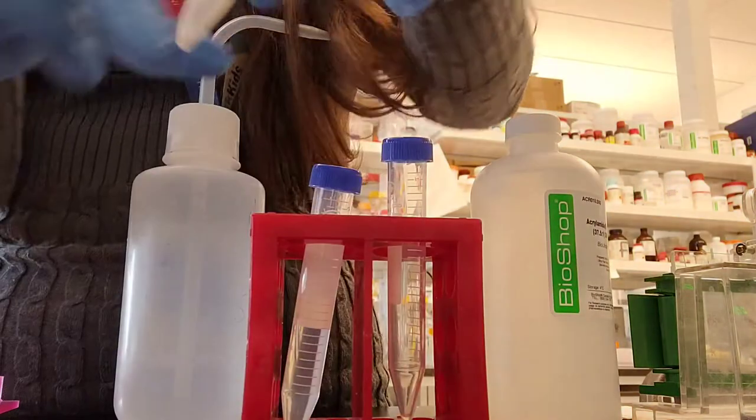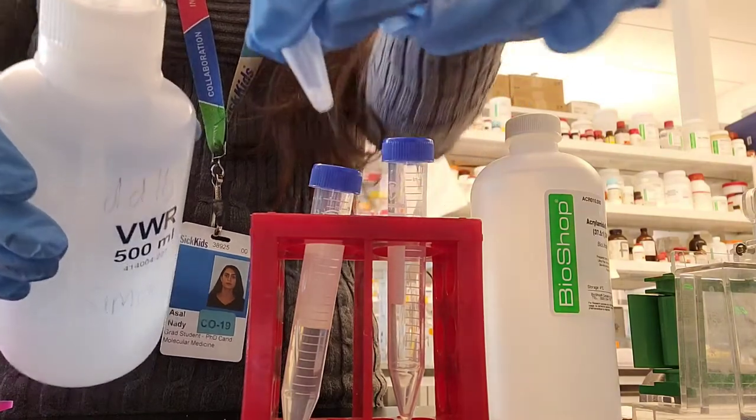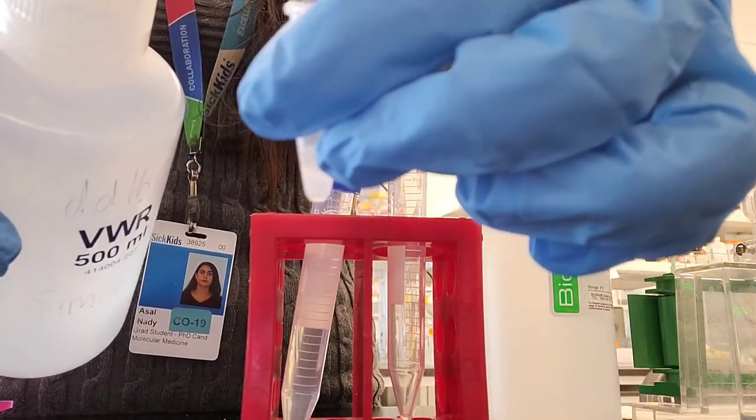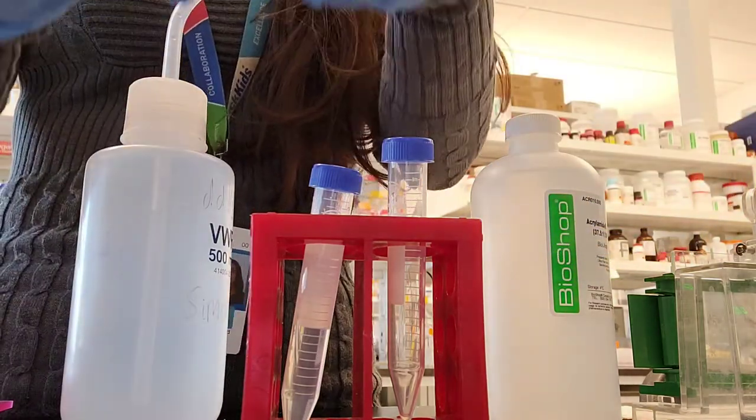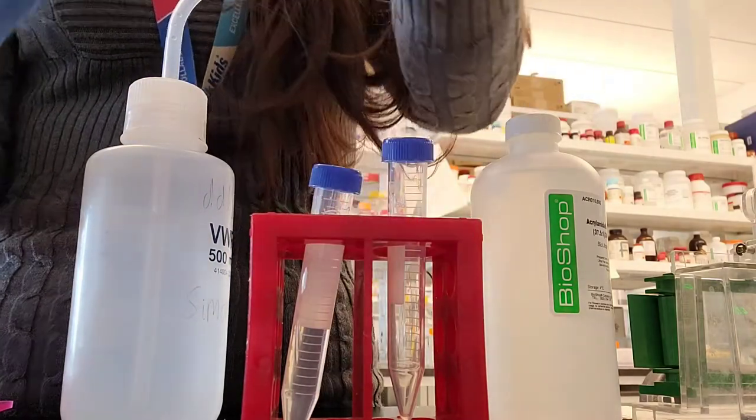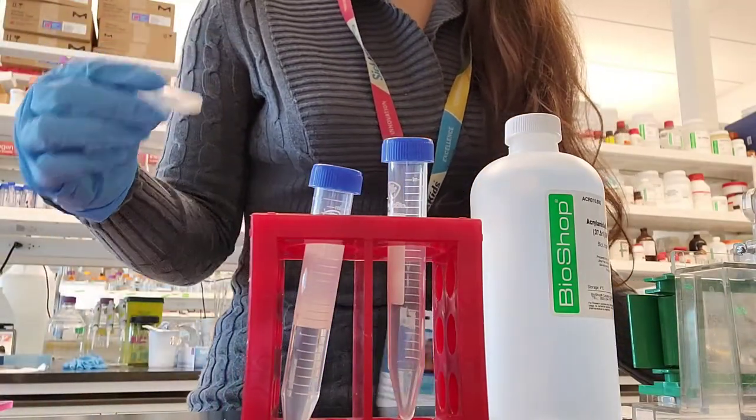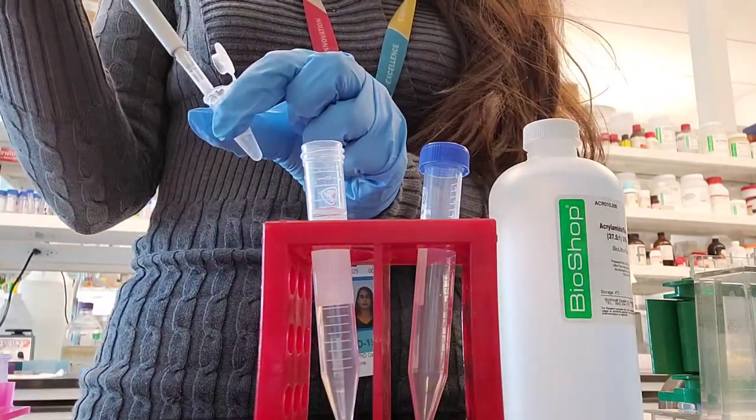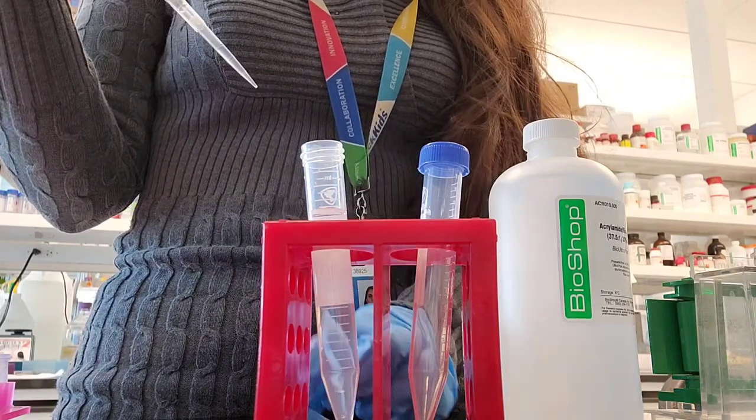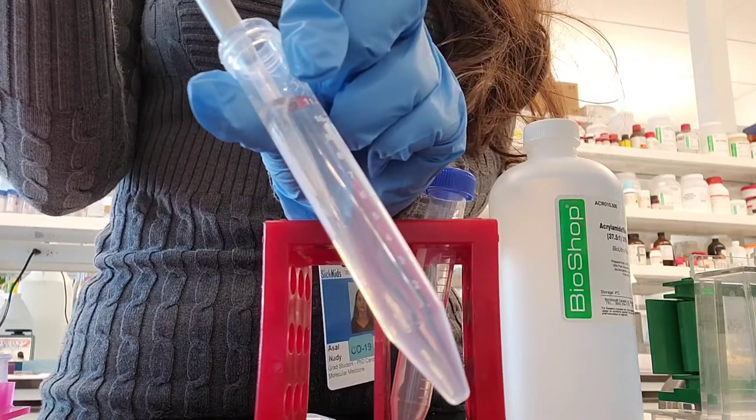Now I'm adding APS, which is one of the ingredients that will help with the polymerization process. I add about 0.02 grams to about 200 microliters of water, and this will give you about a 10% solution of APS. You want to make sure you make this fresh. If you use something from a long time ago it's not going to work and your gel won't polymerize at all.